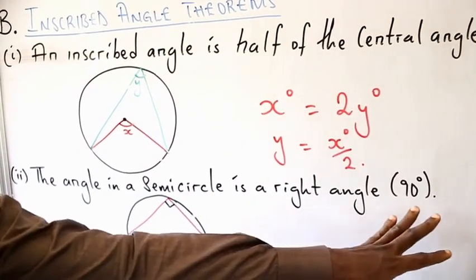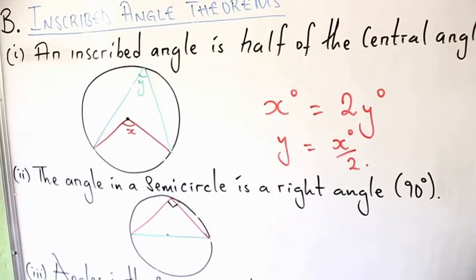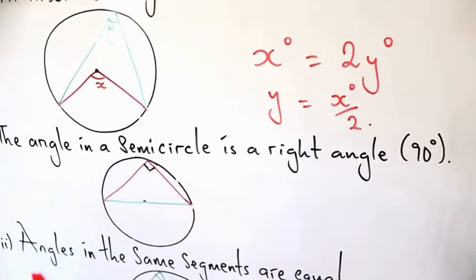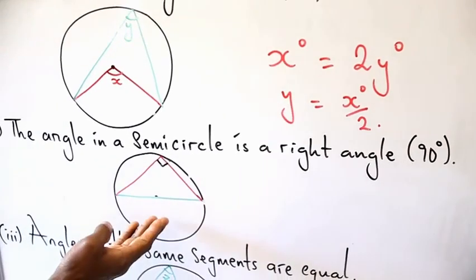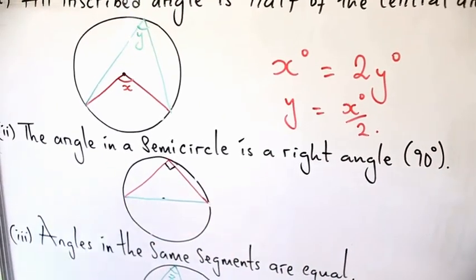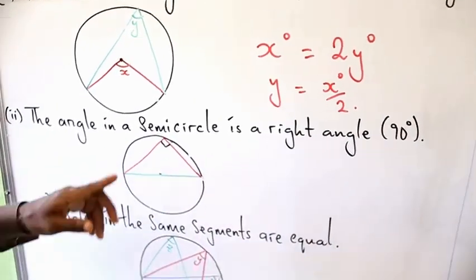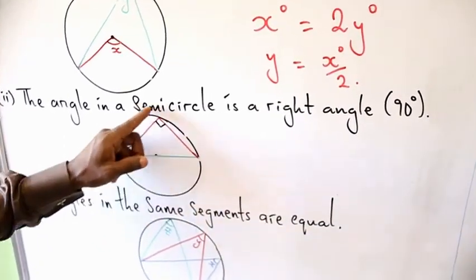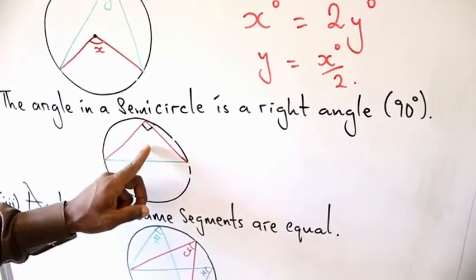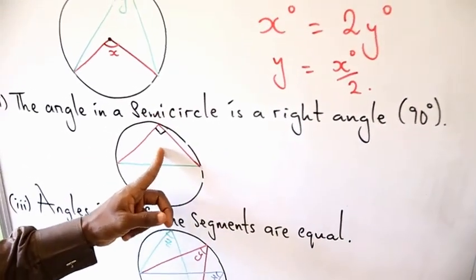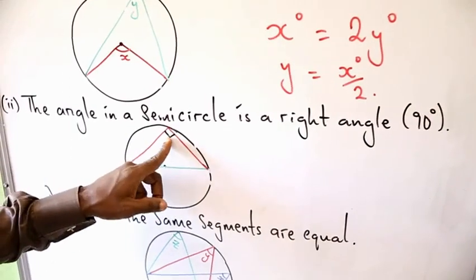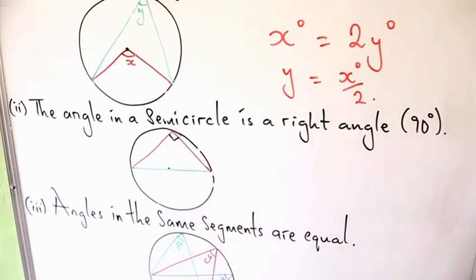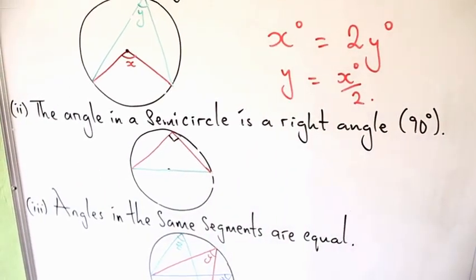Secondly, we look at the theorem on semicircles. The angle in a semicircle is a right angle. As you can see, a diameter divides the circle into two halves, and an angle which lies in the semicircle has a value of 90 degrees.